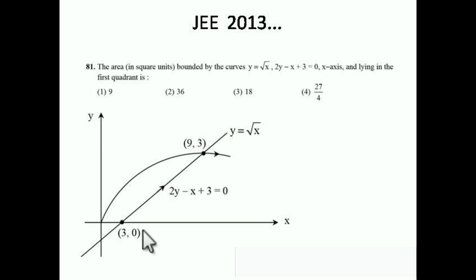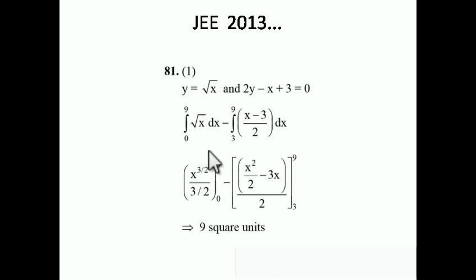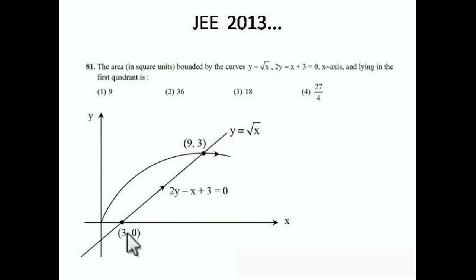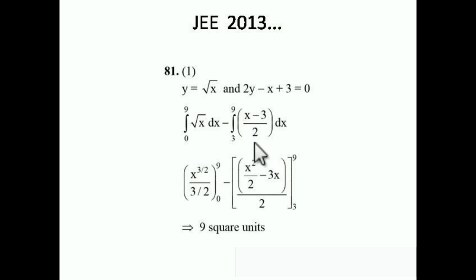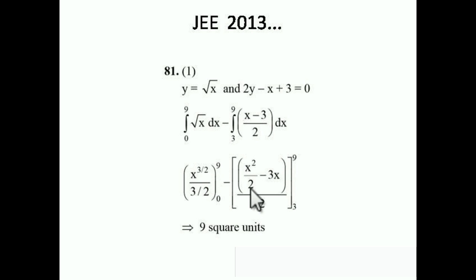The limits are on the x-axis so we use y dx. First: integral from 0 to 9 of √x dx (since y = √x). Second: integral from 3 to 9 of (x - 3)/2 dx (the line equation expressed as x). Integrating √x gives x^(3/2) / (3/2) from 0 to 9, minus [x²/2 - 3x] from 3 to 9. The final answer is 9 square units — option A.